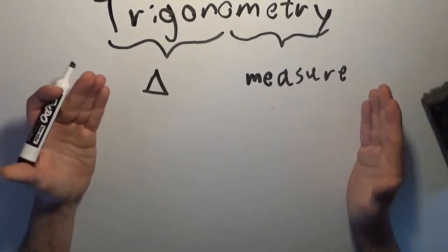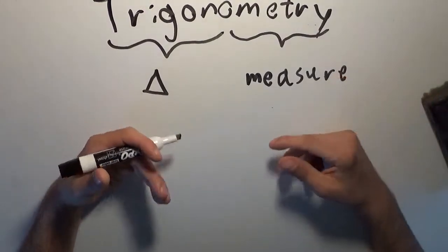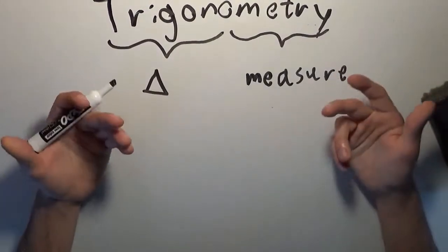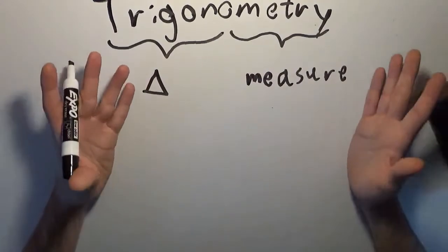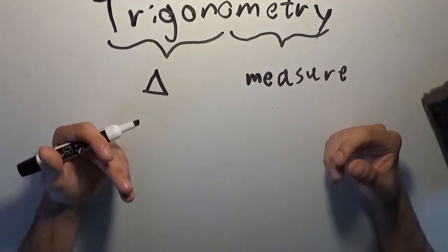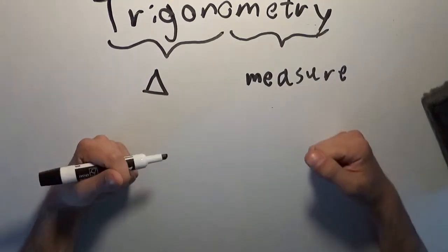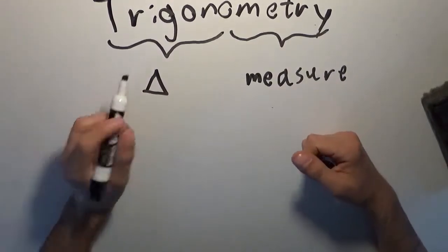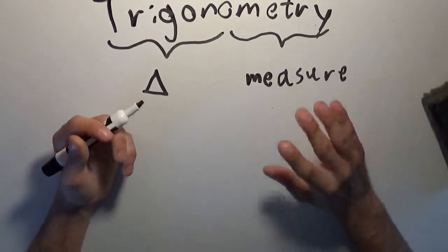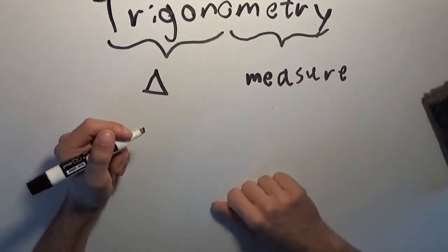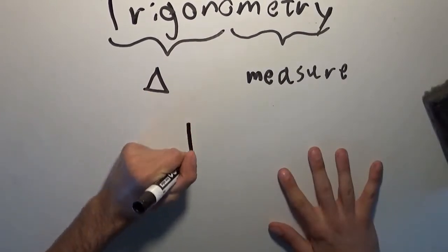Everything that we define is going to be defined based on right triangles. You will later see that we can extend this to other triangles — all triangles, in fact. And then trigonometry as a whole will be more easily understood in the context of circles, which seems a little strange going from triangles to circles, but once we get there you will see exactly what I mean. So first we have to start off with right triangles, and we draw a right triangle.